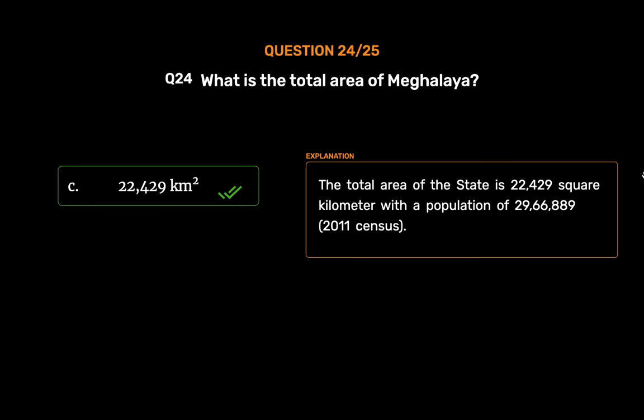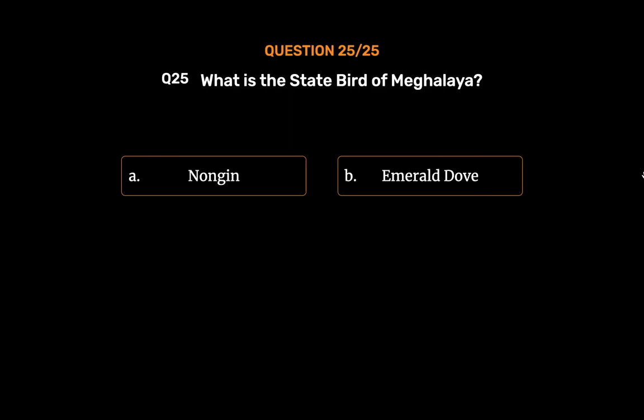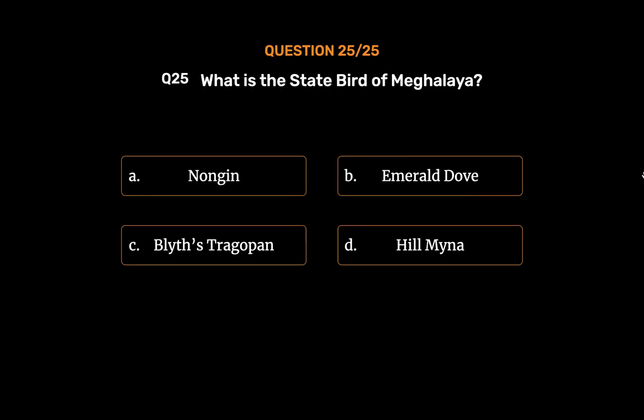Question number 25. What is the state bird of Meghalaya? Option A: Nongkrem. Option B: Emerald Dove. Option C: Blyth's Tragopan. Option D: Hill Myna.